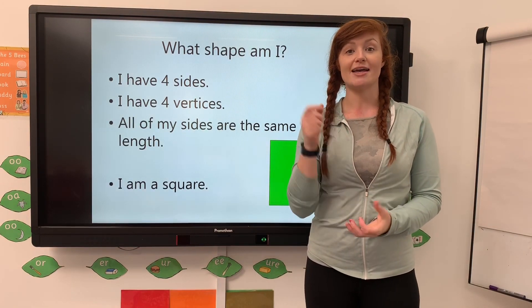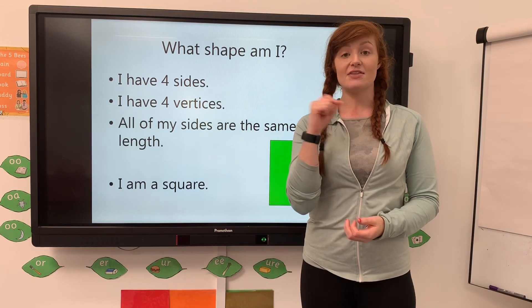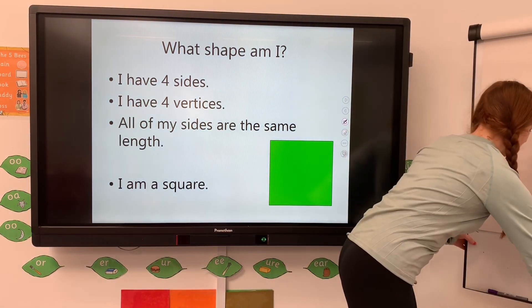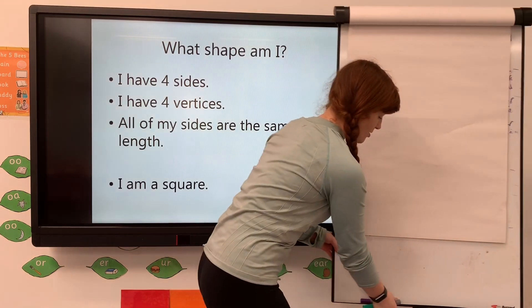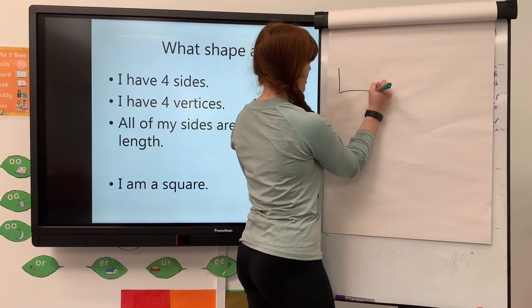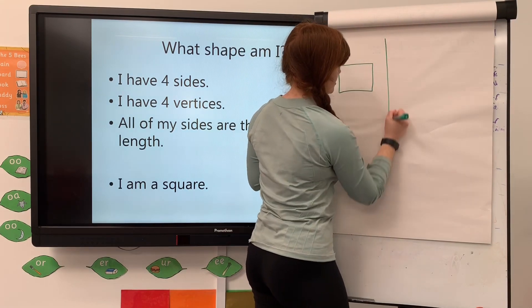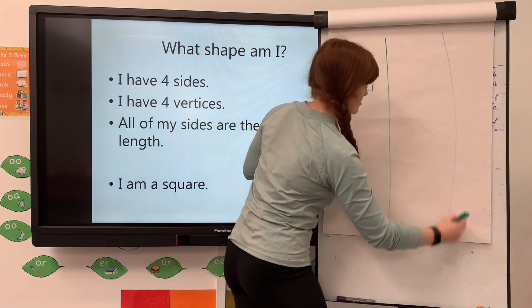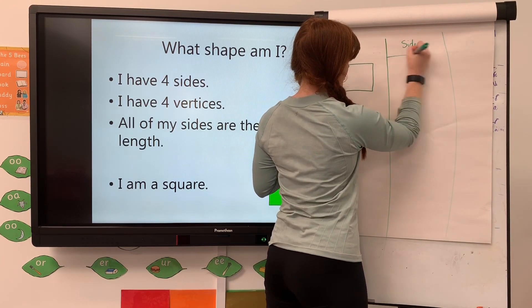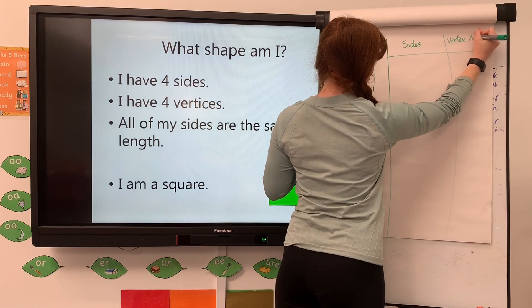What you can do now with the link below is circle around the shapes showing their vertices and their sides, just like we've done here. If you imagine you've got a chart with columns for sides and vertices, you want to put the number of sides and vertices each shape has.